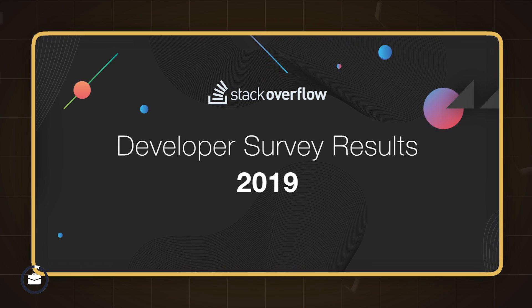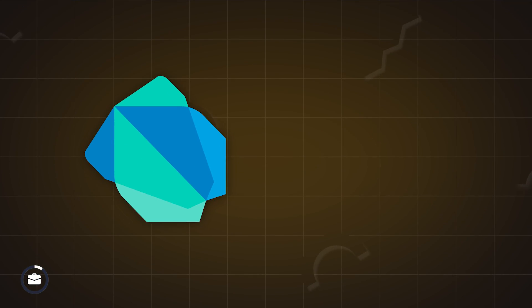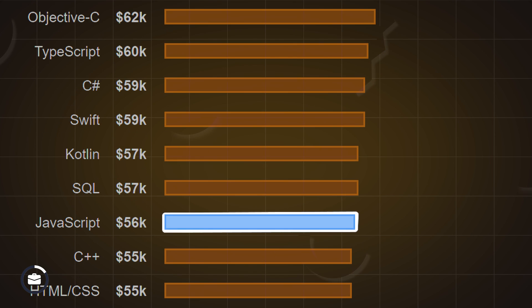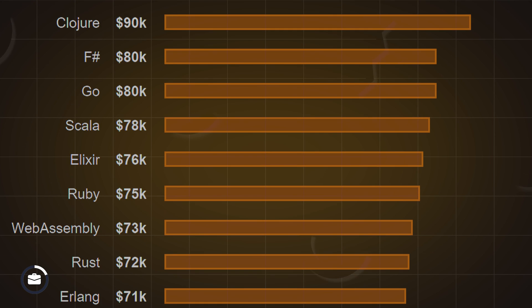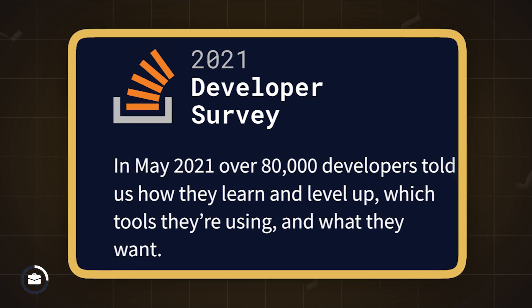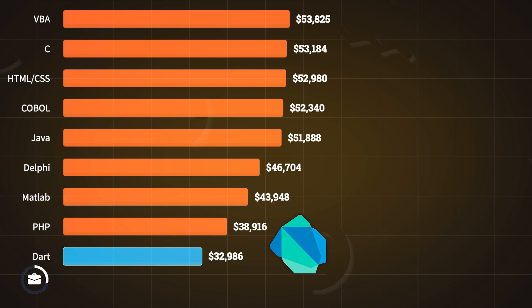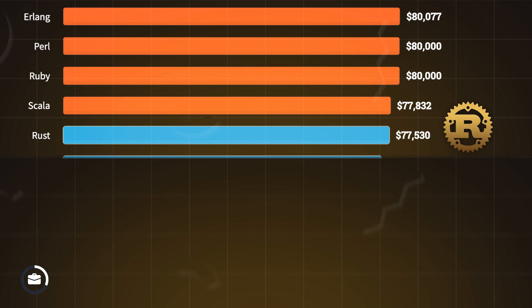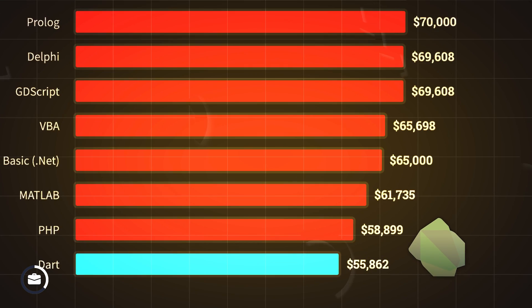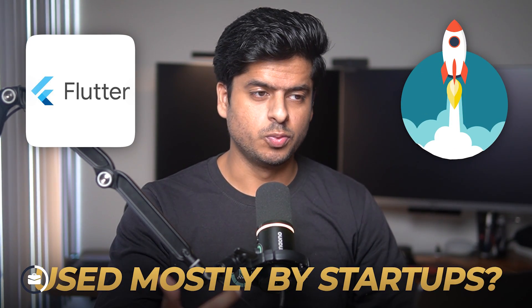If we take a look at the top paying technologies in the last four or five years as per the Stack Overflow developer survey, starting from 2019, Dart — the primary language used for Flutter — is not even in the list. Java is at the bottom, JavaScript is somewhere in the middle, Kotlin is above JavaScript, and Rust and Go are towards the top. Then in 2021, Dart comes into the picture but is still at the bottom, with Go and Rust still leading. And in 2023, the same trend continues — Dart is still at the bottom. Maybe Flutter is being used mostly by startups and early-stage engineers who are not paid that much, or maybe it means Flutter developers are not paid well.